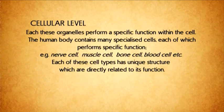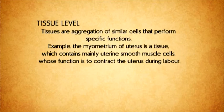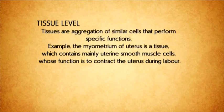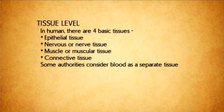At the tissue level, tissues are aggregations of similar cells that perform a specific function. For example, the endometrium of the uterus is a tissue which contains many uterine smooth muscle cells whose function is to contract the uterus during labor. In humans, there are four basic tissues: epithelial tissue, nervous or nerve tissue, muscle or muscular tissue, and connective tissue. Some authorities consider blood as a separate tissue.